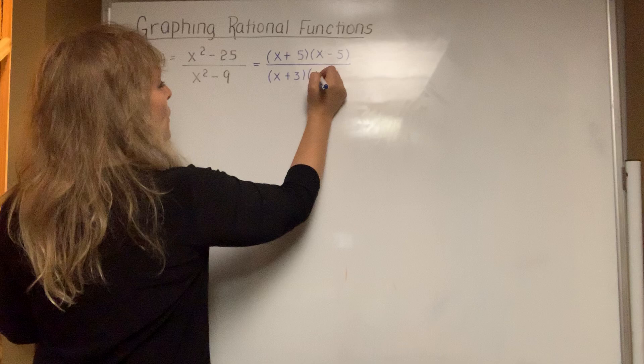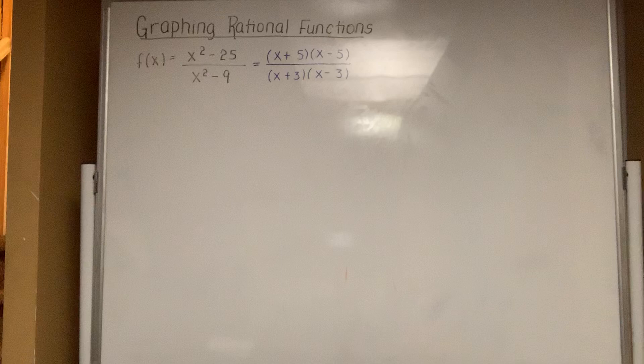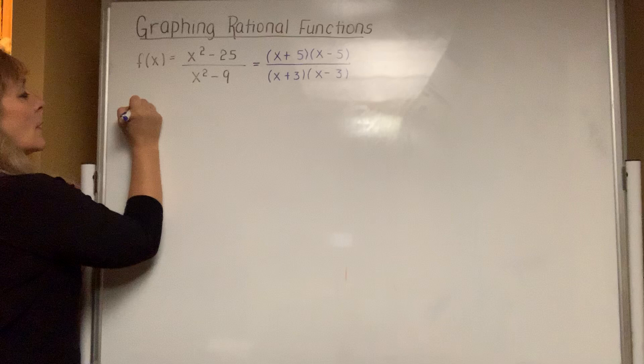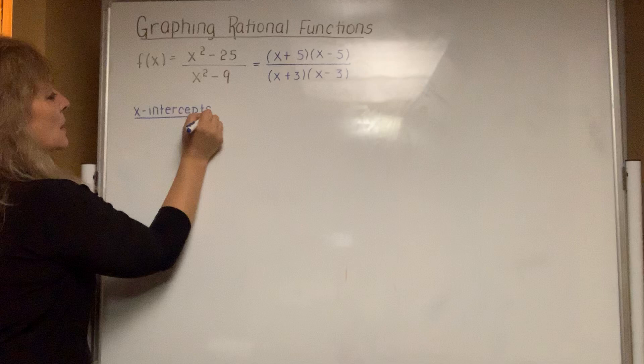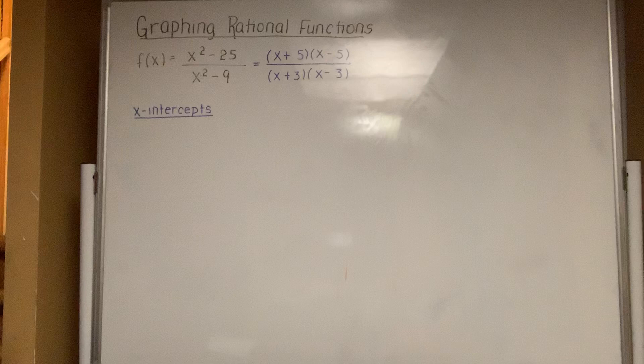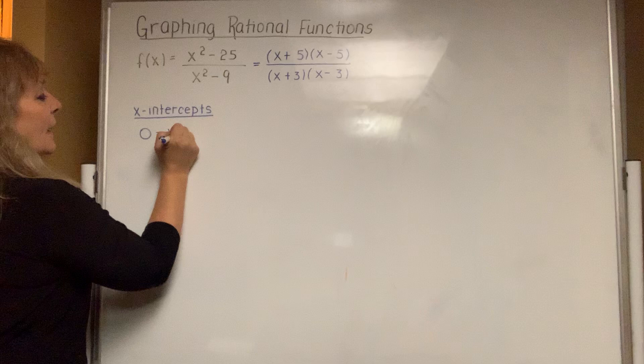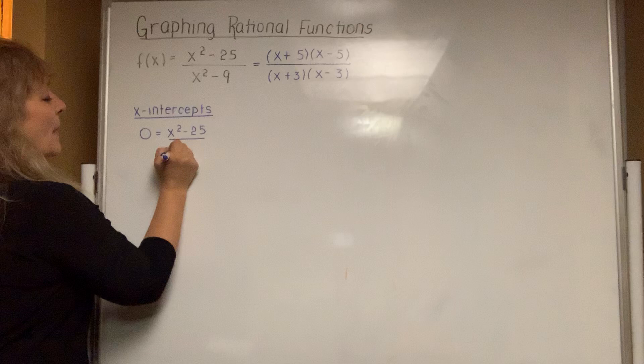When you look at this, the factored version does not cancel out any factors, which means the version in black is exactly the same as the version in blue. When you are asked to find x-intercepts, all you have to do is substitute in zero for f of x, which means f of x is going to be zero. I'll use the version in black: x squared minus 25 over x squared minus 9.